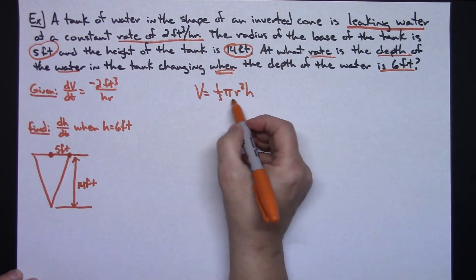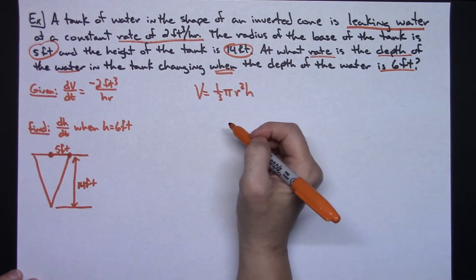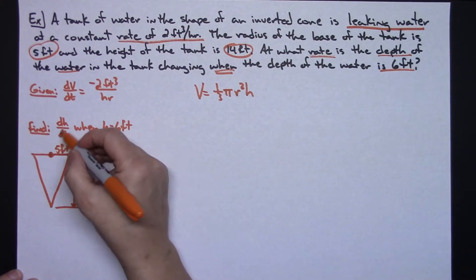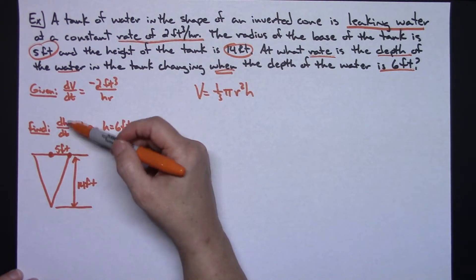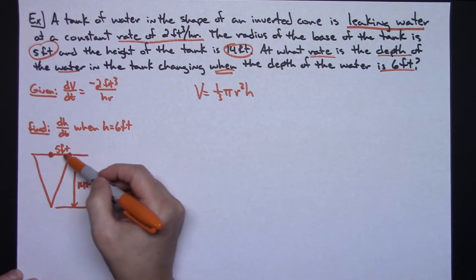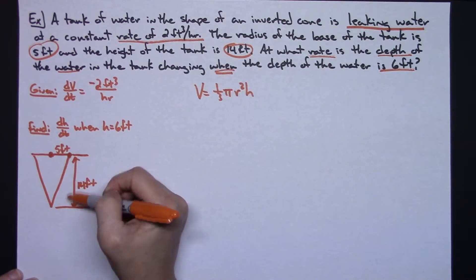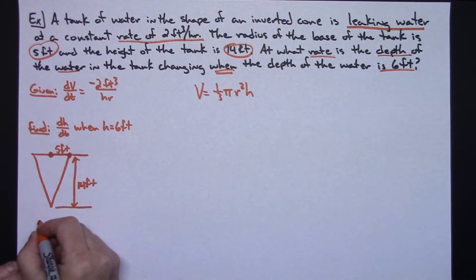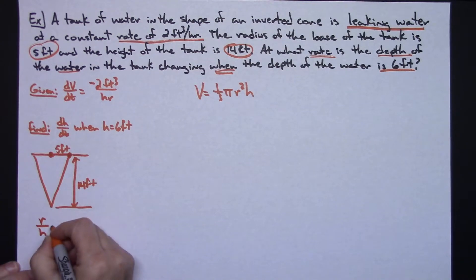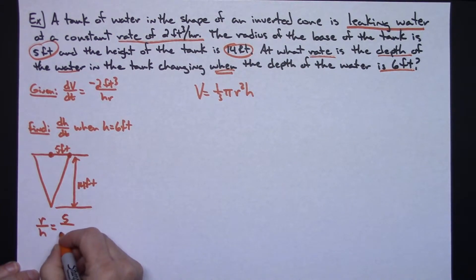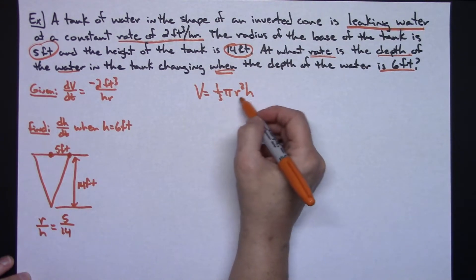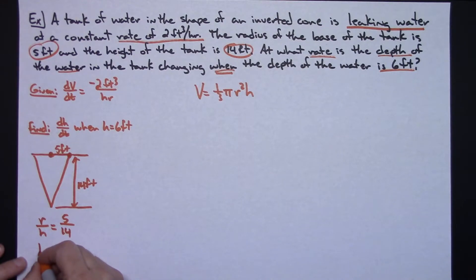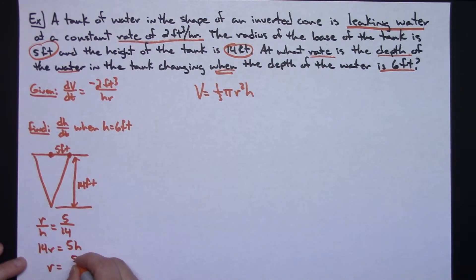At this point I've got h, r, and V in the equation, but since I'm trying to find dh/dt it's going to be much easier to put this equation entirely in terms of h. I can do that using a proportion relating the radius to the height: r over h equals 5 over 14. Cross-multiplying and solving for r gives 14r equals 5h, so r equals 5 over 14 times h.